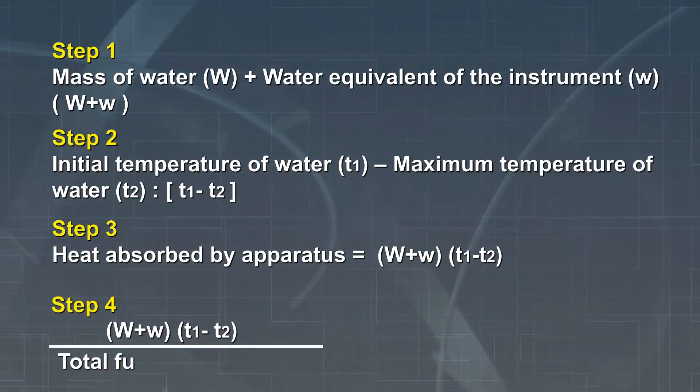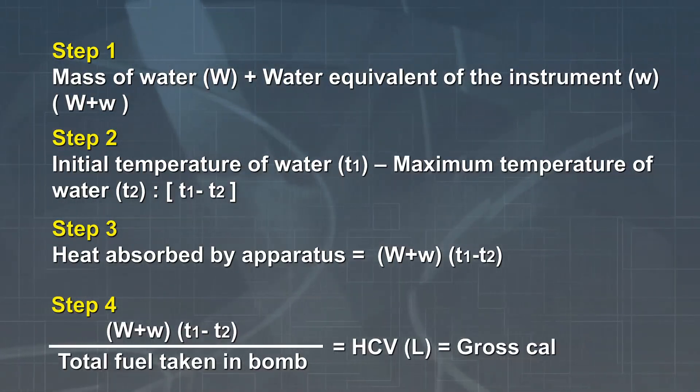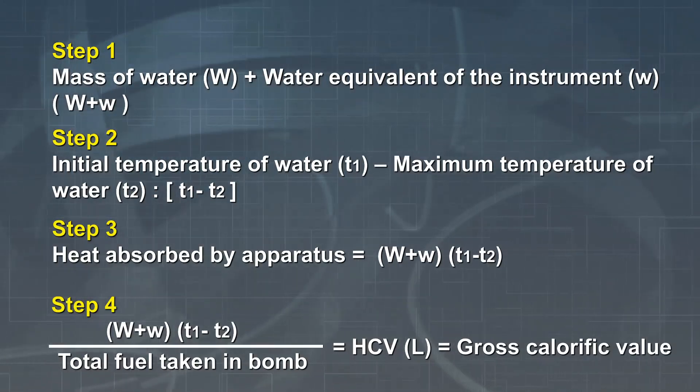Gross calorific value or L is determined by dividing the result by the amount of fuel taken in the bomb crucible.